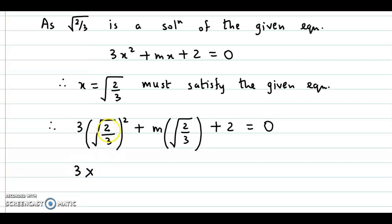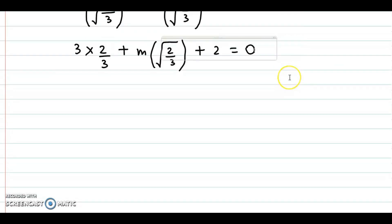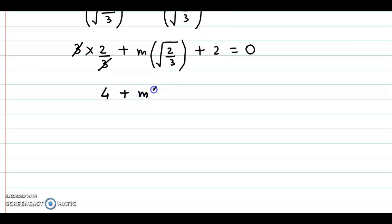If we simplify this, we get 3 times root of 2 by 3 squared, plus m into root of 2 by 3, plus 2 equal to 0. Upon further simplification, this 3 and this 3 get cancelled. So we have 2 plus m into root of 2 by 3, and 2 plus 2 is 4, so 4 plus m into root of 2 by 3 is equal to 0.